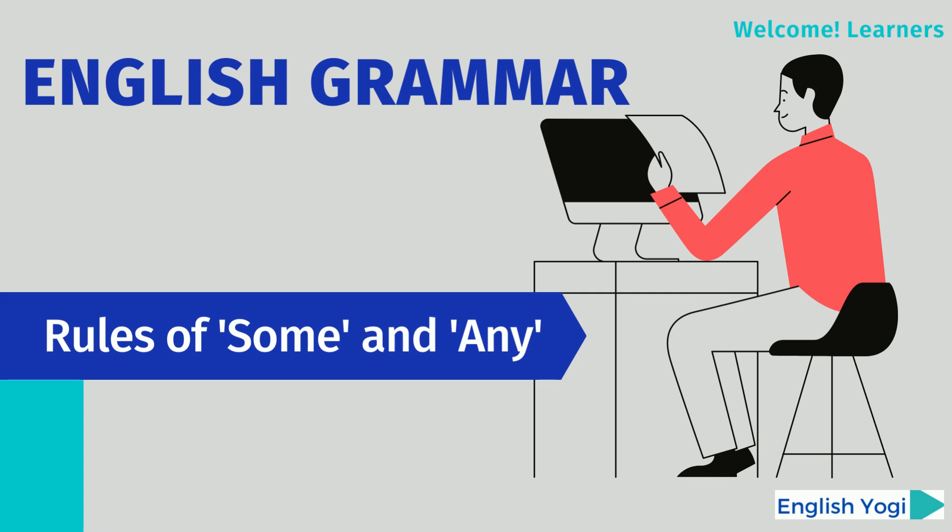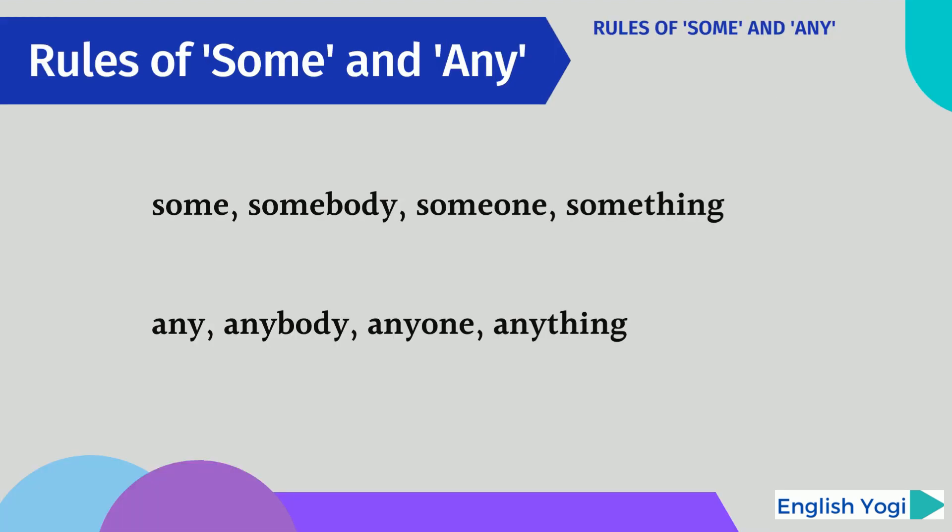Welcome to English Yogi, a YouTube channel completely dedicated to the students and learners of the English language. In the present video, we will discuss some basic rules of 'some' and 'any'. We all know that there are certain words with 'some' — for example, somebody, someone, something — and there are also certain words with 'any' — for example, anybody, anyone, and anything. So in the present video, we will discuss some of the rules regarding these words.